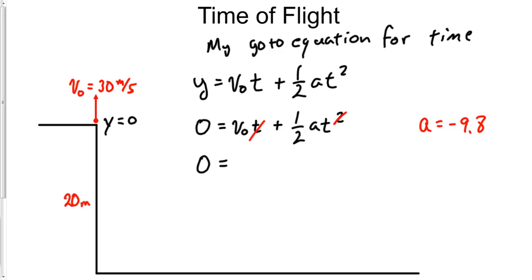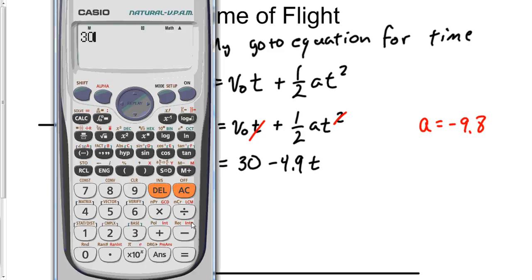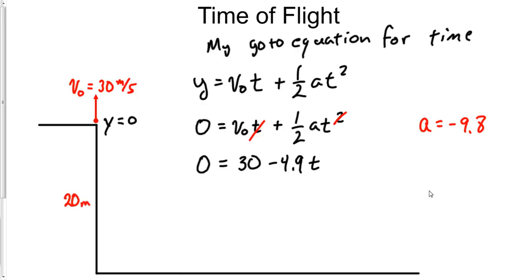So let's plug this in. 0 = v₀ is 30, half of this is going to be half of negative 9.8, which is negative 4.9. Check this answer out: it's basically 30 divided by 5, so it's going to be 6. But for the sake of some of you, I'll go ahead and do this: 30/4.9 equals 6.12.